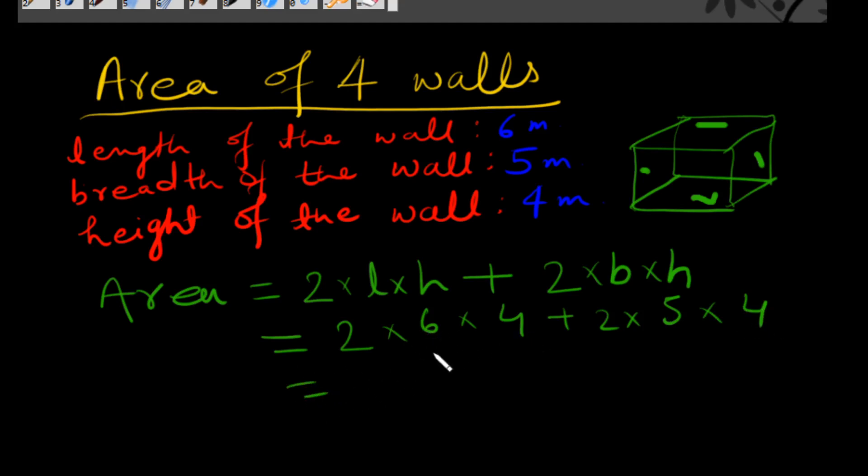So here we have 6 times 4 is 24, times 2 is 48, plus 5 times 4 is 20, times 2 is 40.